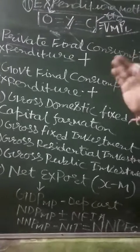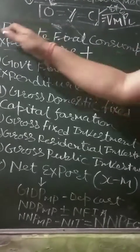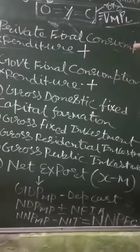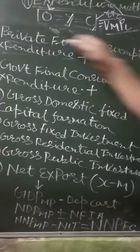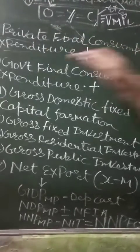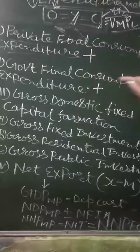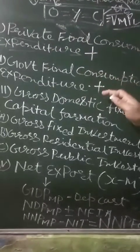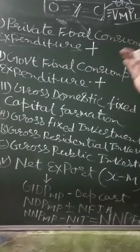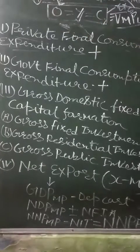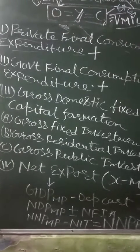The second item is government final consumption expenditure. Both private final consumption expenditure and government final consumption expenditure amounts should be added up while we are calculating national income through the expenditure method.